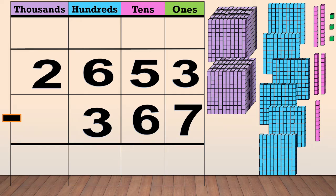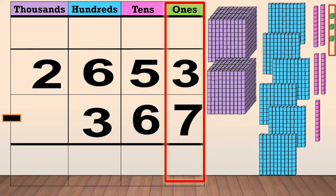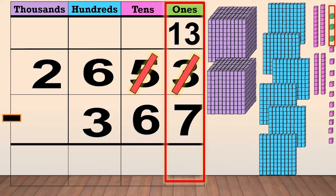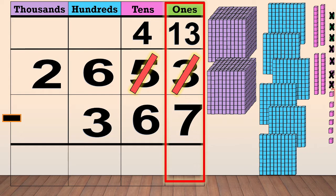First, we subtract the ones: 3 minus 7. We cannot subtract 7 from 3, so we need to regroup 1 ten into 10 ones. Now we have 13 ones. We cross out the 3 and write 13 as new ones, and cross out the 5 and write 4 at the top. We subtract the ones: 13 minus 7 equals 6.